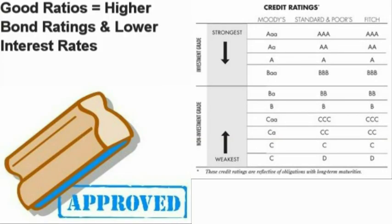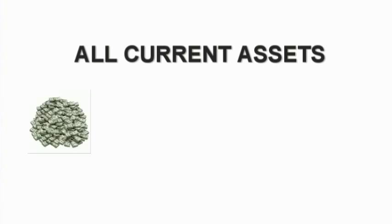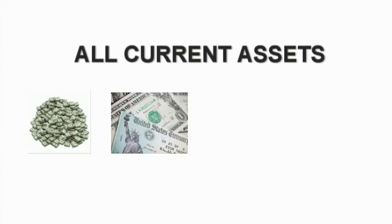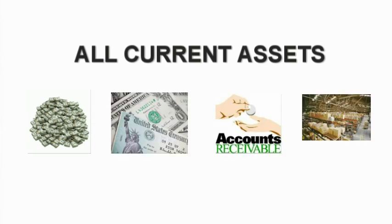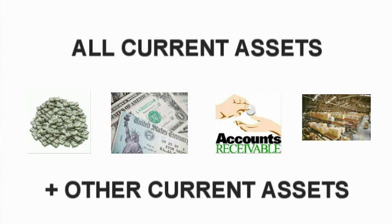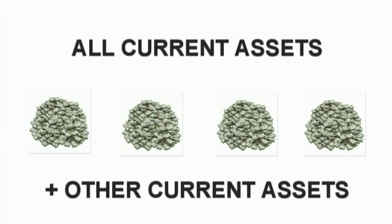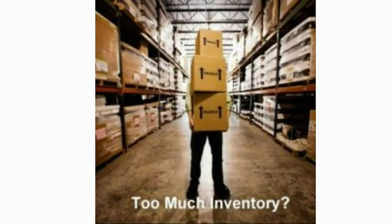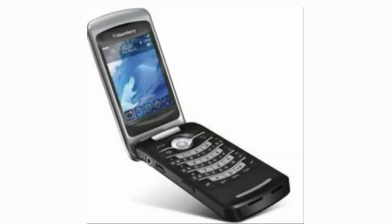Another important consideration is that the current ratio uses all current assets, including cash and cash equivalents, marketable securities, accounts receivable, inventories, and other current assets. In theory, these assets can all easily be converted into cash. However, in reality, this isn't always true. For example, the value of inventory on the balance sheet might not be accurate, especially if the company's inventory consists of items that nobody wants, and they may have to sell at huge discounts to convert it to cash quickly.